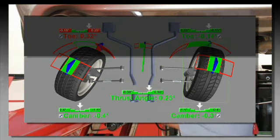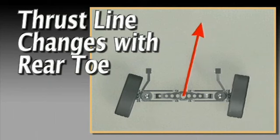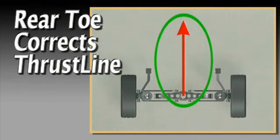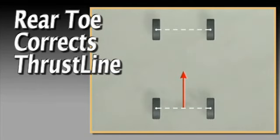Complete the rear wheel alignment by correcting camber on each side if adjustable, then set toe on each side. As toe is adjusted, thrust line changes too. Once toe is at spec on each side, thrust line will be parallel with the geometric center line.